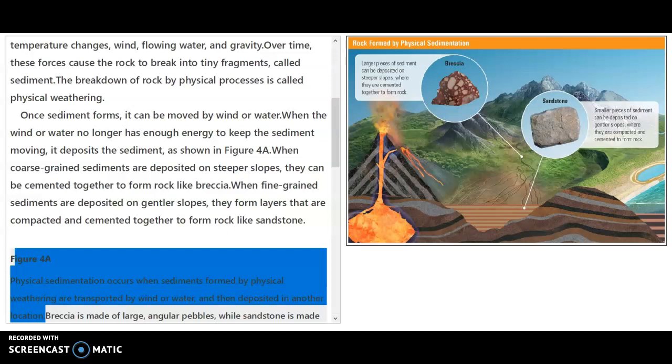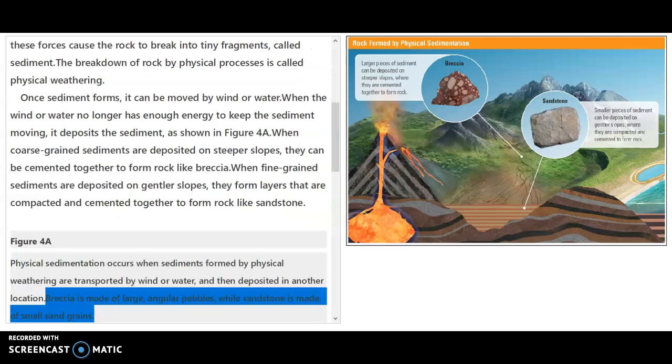Figure 4a is a physical sedimentation occurs when sediments formed by physical weathering are transported by wind or water and then deposited in another location. Breccia is made of large angular pebbles, while sandstone is made of small sand grains. They are both sedimentary rocks, but they look different and are formed differently.